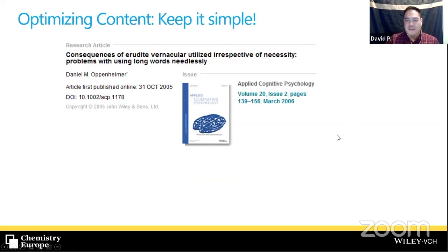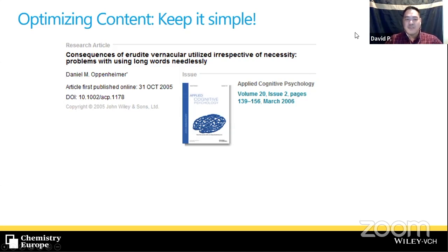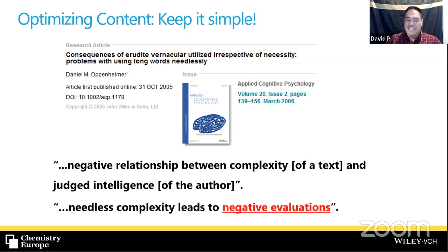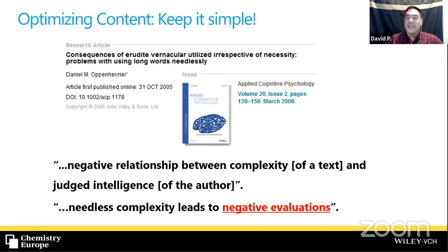There's a study from 2005-2006 in Applied Cognitive Psychology titled 'Consequences of erudite vernacular utilized irrespective of necessity: Problems with using long words needlessly.' The title demonstrates the paper's point. The main take-home message is that there's a negative relationship between the complexity of a text and the judged intelligence of the author — needless complexity leads to negative evaluations. Simply said: the more complicated you sound, the dumber people think you are. It takes more effort and practice to say something concisely and directly than to overcomplicate things.